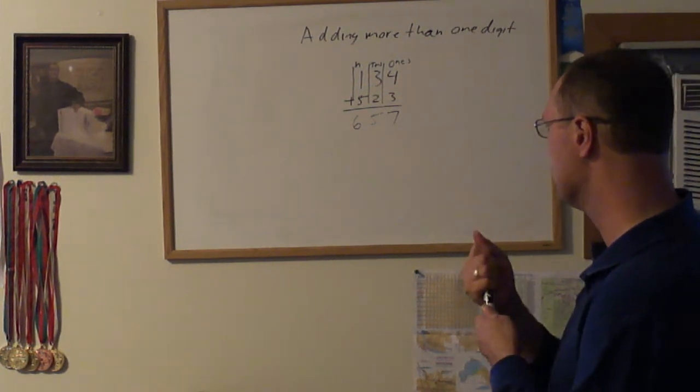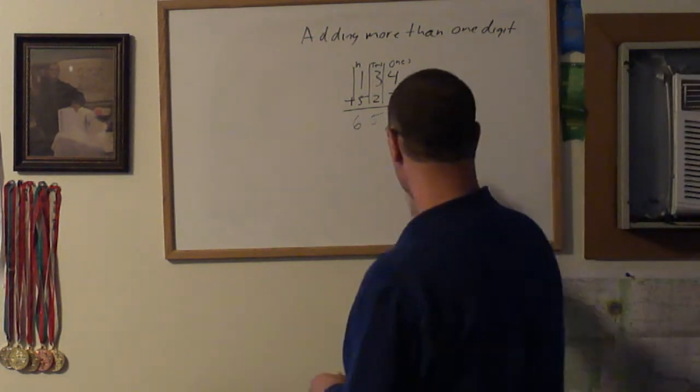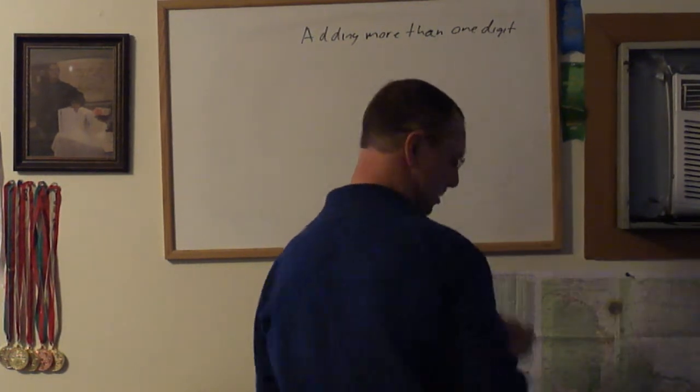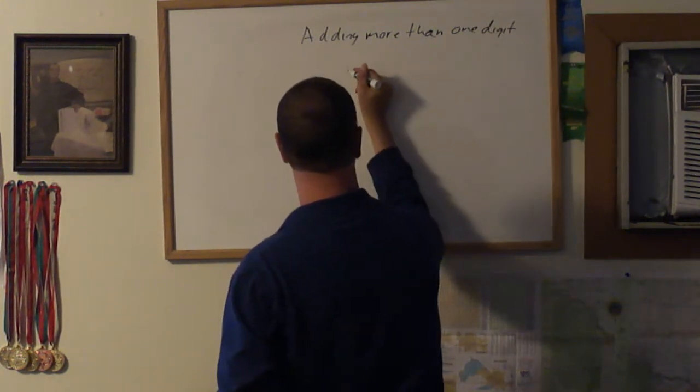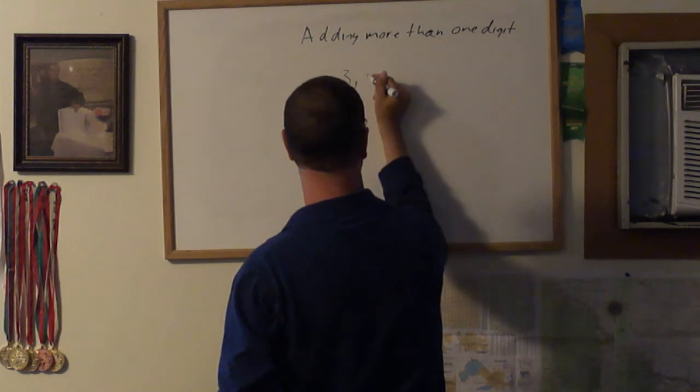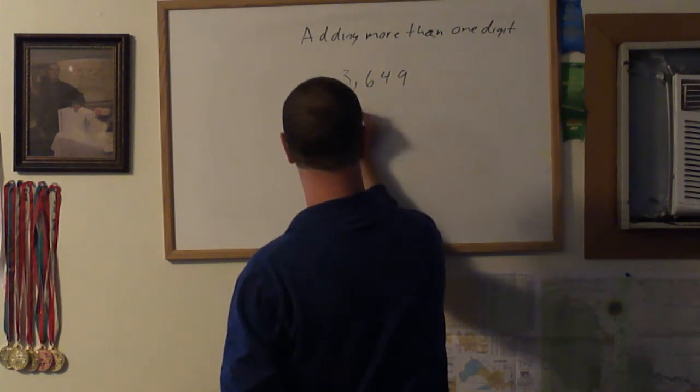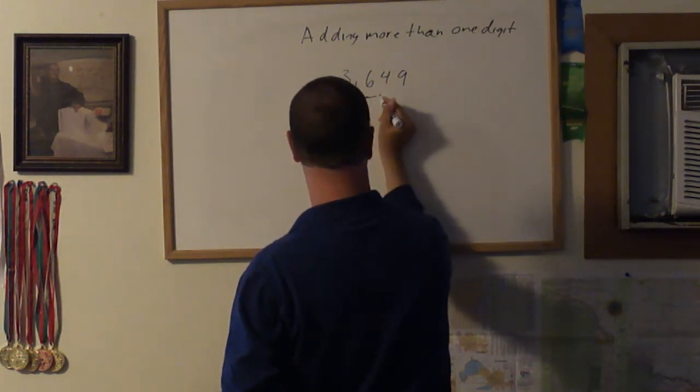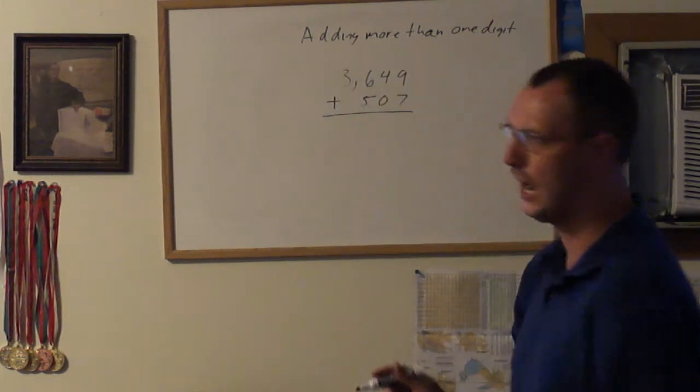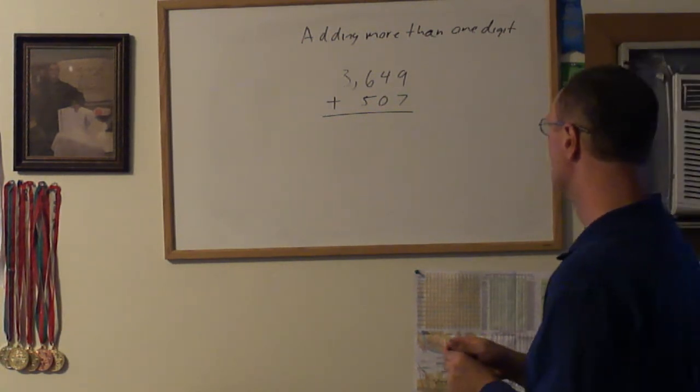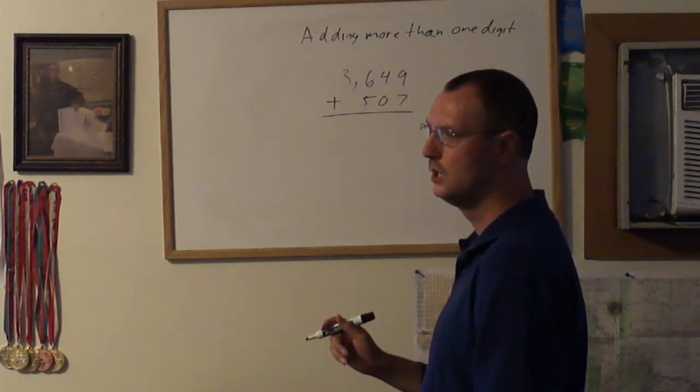Now that is just a simple addition problem. Now let's try something a little more harder: 3649 plus 507.